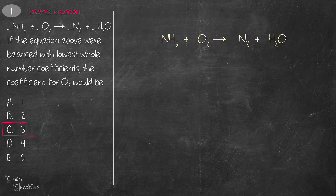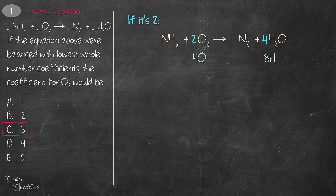There's another way using a back-solving trick. You start with one of the middle numbers from the answer choices and plug it into the equation to see if it works. Let's try 2 — we plug 2 in front of O2 giving us 4O. To balance O on the right we add a 4 in front, giving us 8H. But on the left we have 3H and there's no whole number to put in front of NH3 to get 8H, so we abandon 2 and try 3.